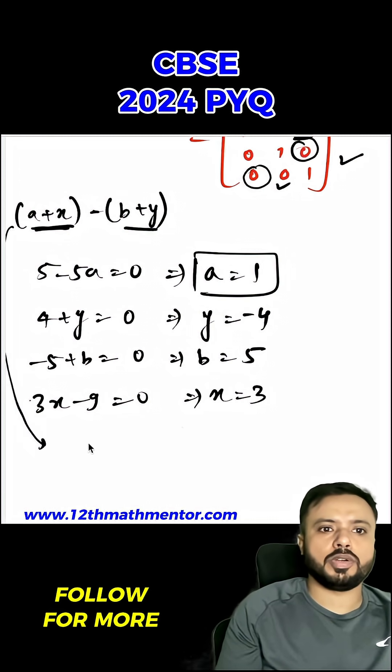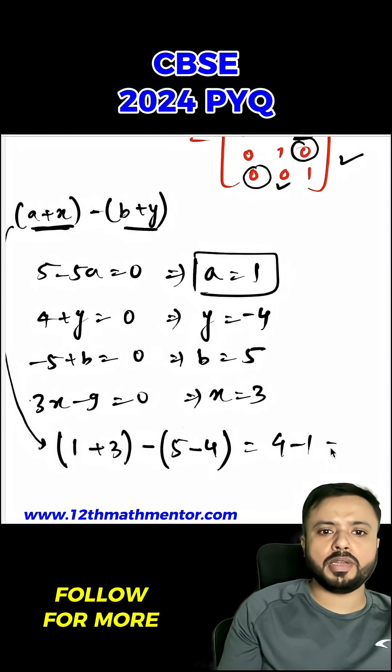I will just substitute it here. So it would be a which is 1 plus 3, minus b which is 5, minus (-4). This equals 4-1, hence 3 is the answer.